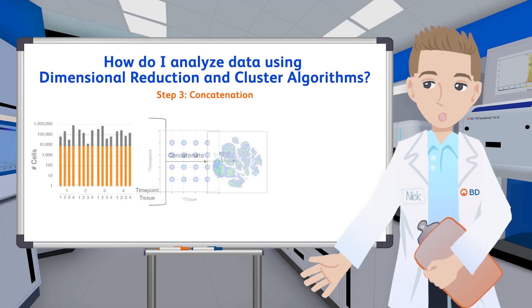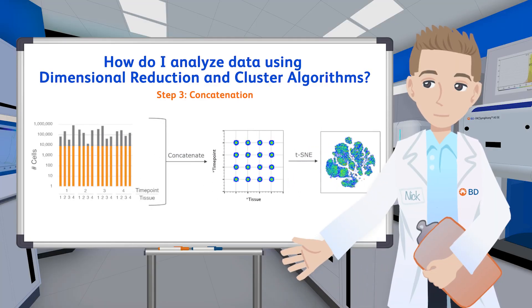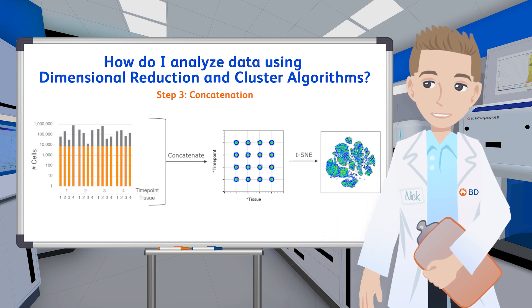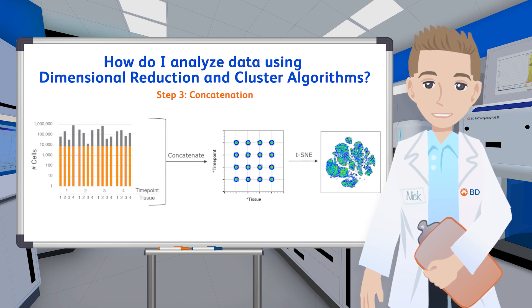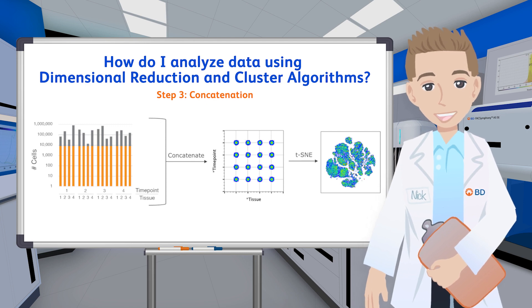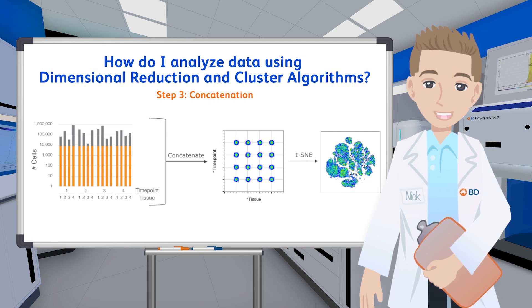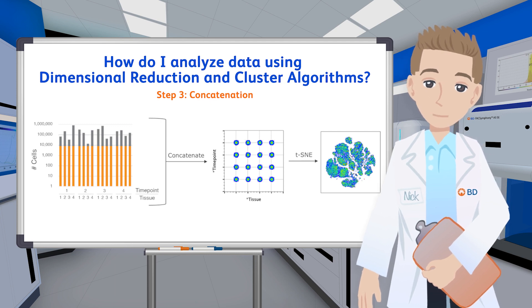The primary difference between standard immunophenotyping and our high-dimensional workflow is the concatenation step. We have to merge all of our samples into one file before we can run the high-dimensional tools, due to the nature of how those algorithms work.